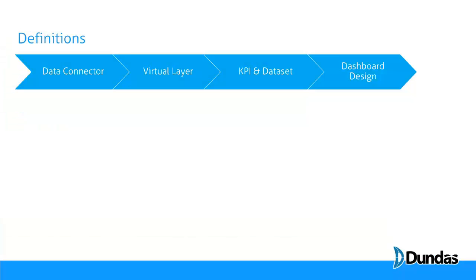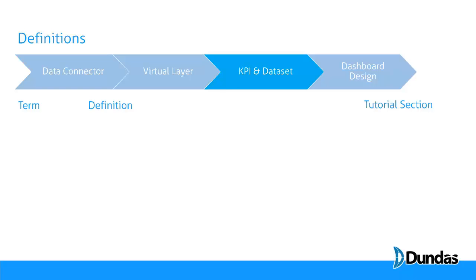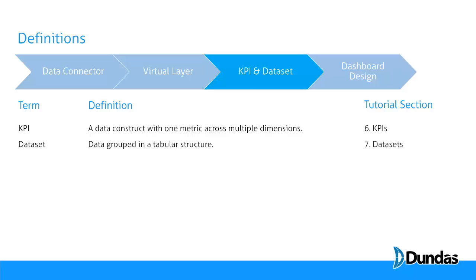In an earlier video, I talked to you about the Dundas Dashboard workflow and the four steps that you follow when you create dashboards. In the third step, you're creating KPIs and data sets. As a quick refresher, a KPI is a specific data construct with one metric, numeric column, spread across multiple dimensions, whereas a data set is simply data grouped in a tabular structure.